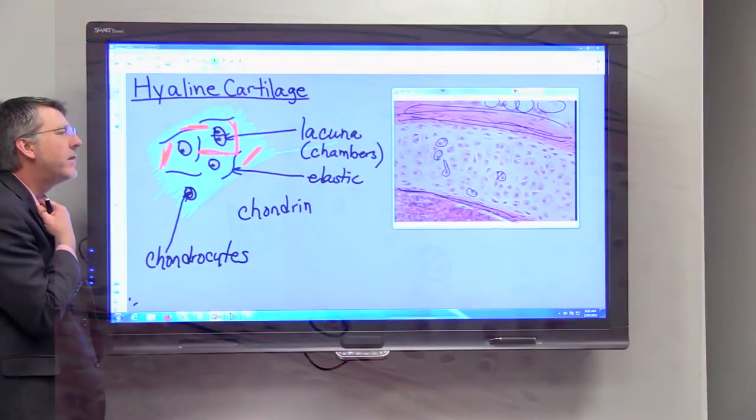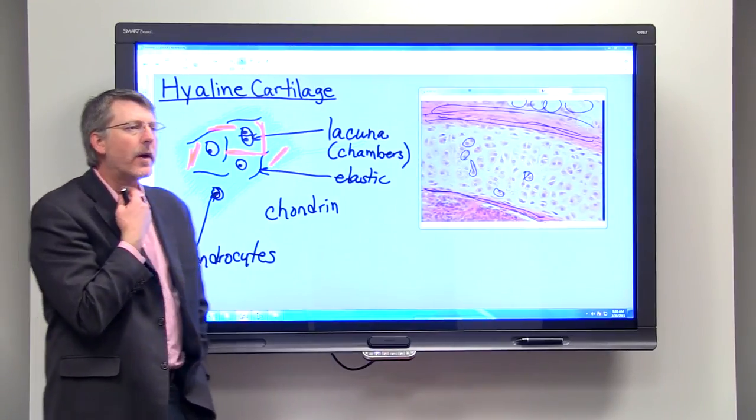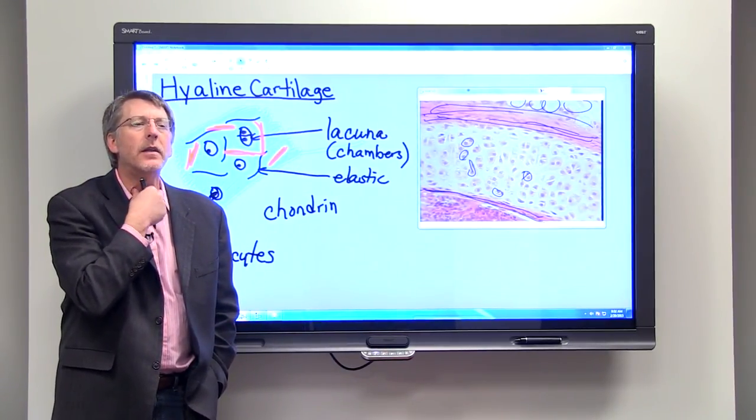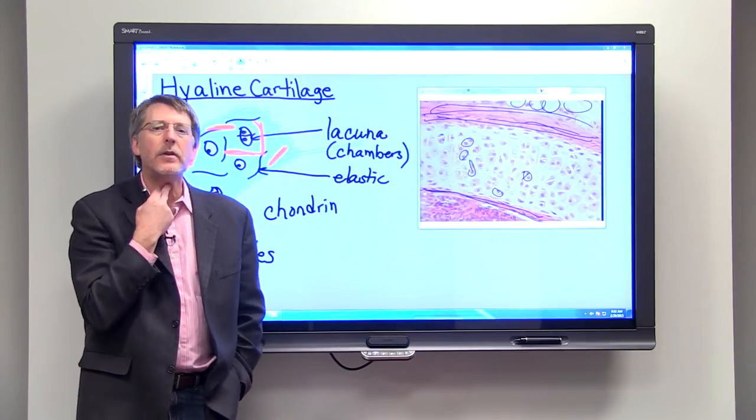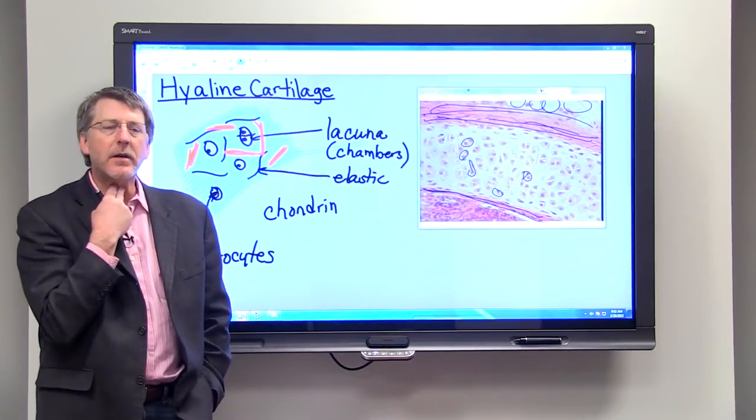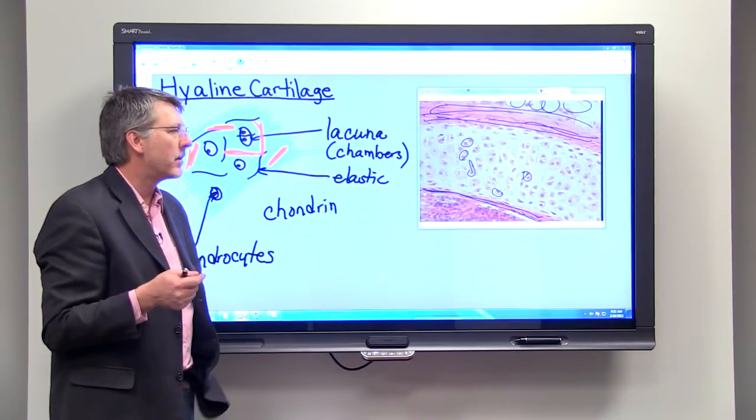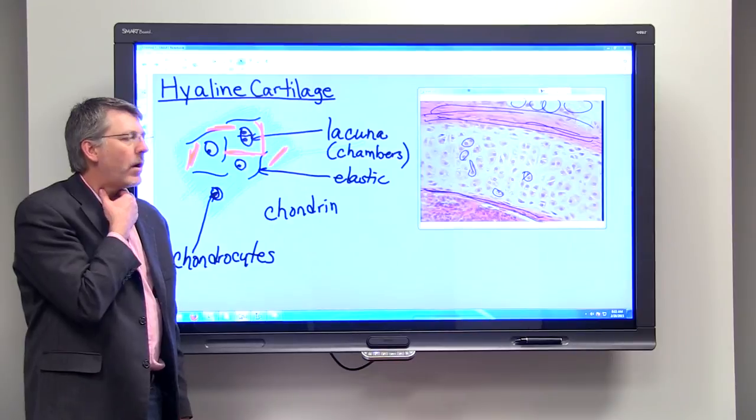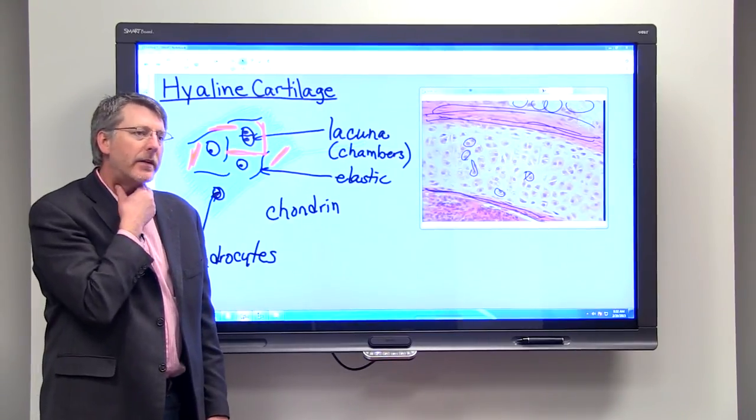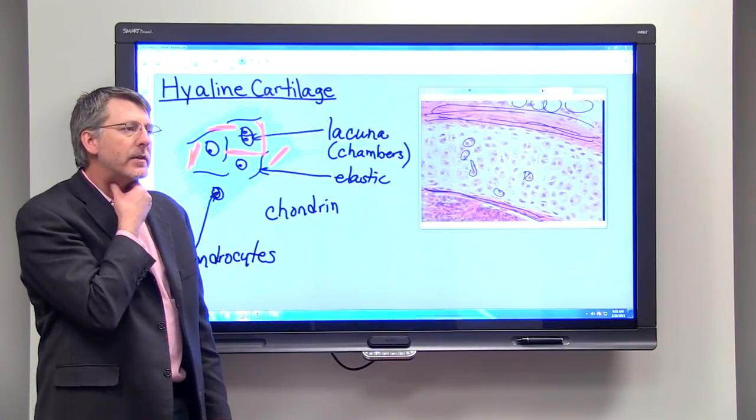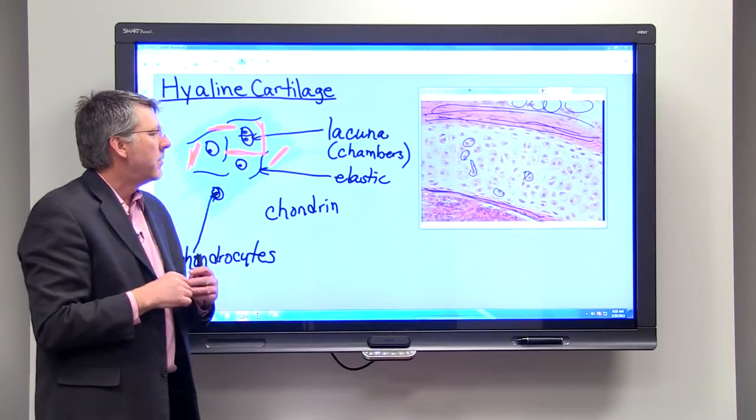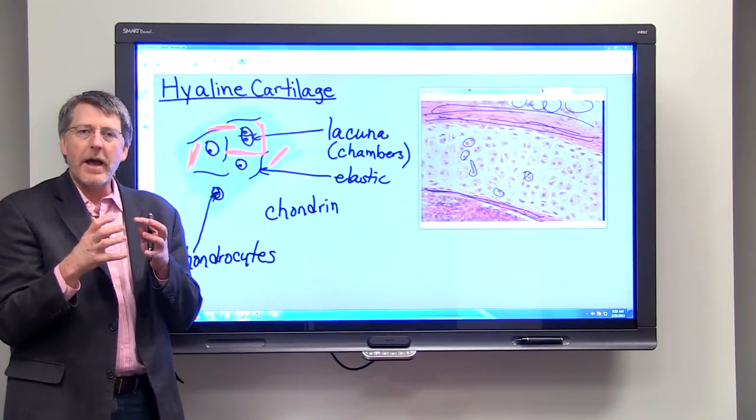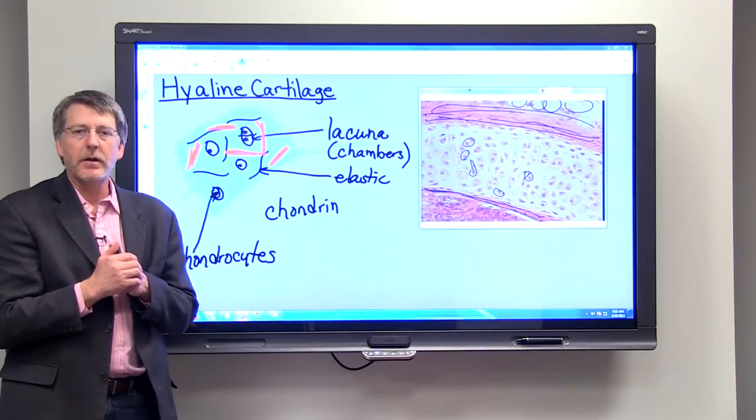So if you want to feel the hyaline cartilage in your trachea, you can just sort of rub up and down in your trachea, and you can feel the rings there. And your larynx or your voice box is also made of hyaline cartilage. You want that to be flexible, especially if you have a blow to your throat. You would want it to flex, and you can take your trachea and your larynx and move it around a little bit. But if you had a blow to your throat, you wouldn't want it to collapse, because that would impair your ability to breathe.